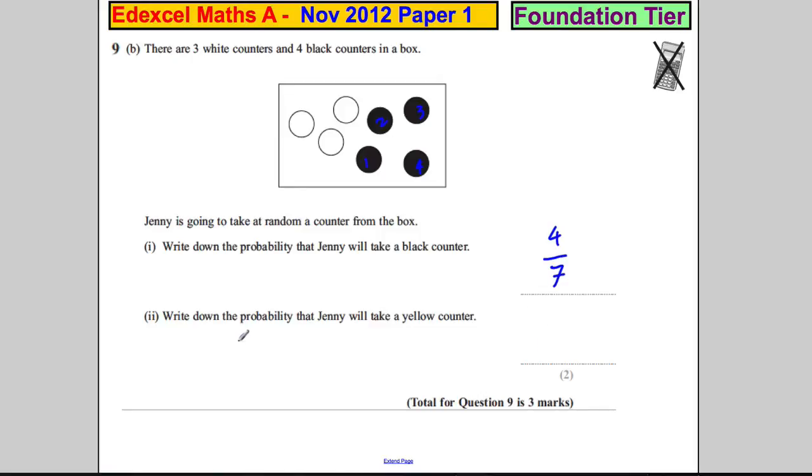Write down the probability that Jenny will take a yellow counter. Well, in the box we're told there are three and four. There are no yellow counters, so the probability is zero and we're done.